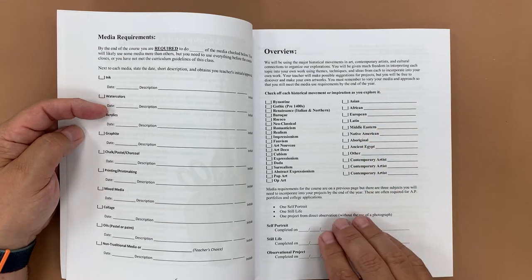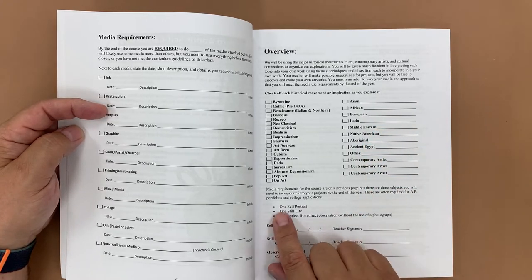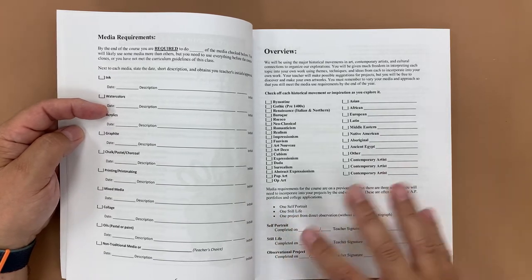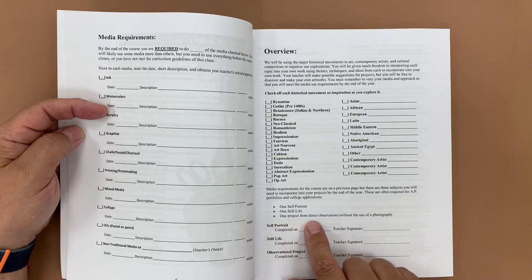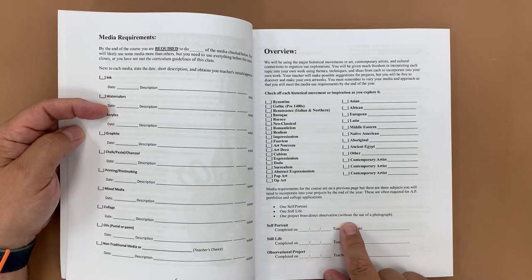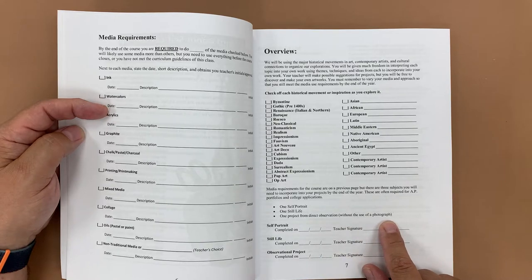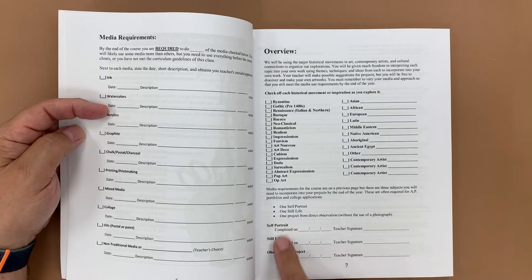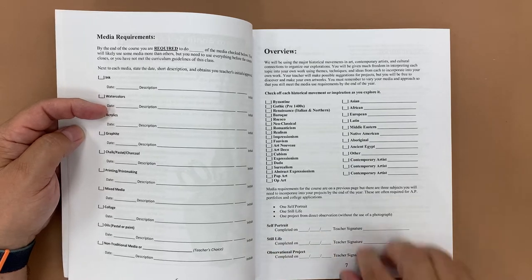I also require that through the course of a year, a student does one self-portrait at least, one still life where they're doing a collection of objects, and then one project from direct observation. This can sort of be a still life, but I'm thinking of something that's done without a photograph. So again, the student puts in the date when they completed that assignment, and then the teacher can sign off on that.